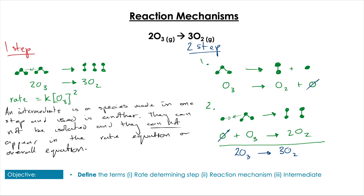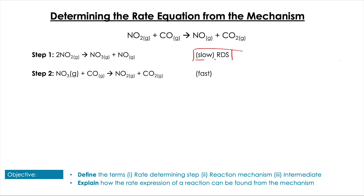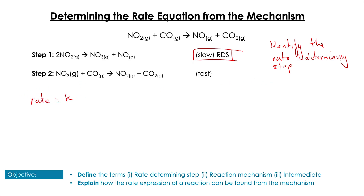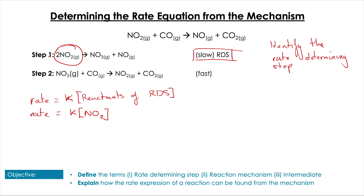We can use the rate determining step to identify the rate expression. The first thing we need to do is identify the rate determining step. For example, with a proposed mechanism for the reaction of NO2 with CO: once we know the rate determining step, the rate equation equals K times the reactants of that step. In this case there are two moles of NO2, so our rate expression is rate equals K[NO2]² because there are two moles of NO2 in the reactants of the rate determining step.